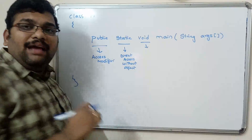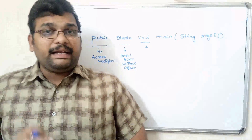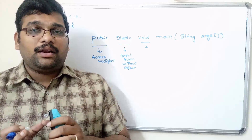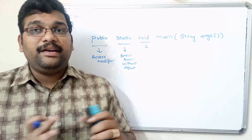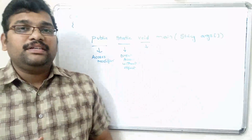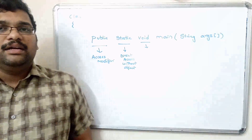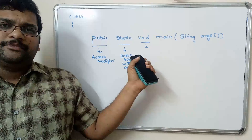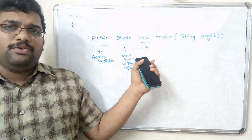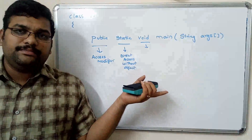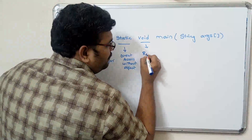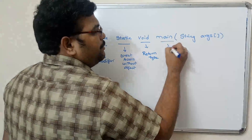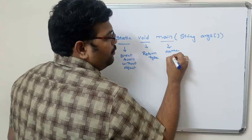For every method there must be a return type — that is the rule we discussed in previous sessions. If you do not write the return type, it will be treated as a constructor. Main function is also a method, so it should also have a return type. It need not be void — it can be int, depending on the logic of your program. So void is the return type, and main is the name of the function.